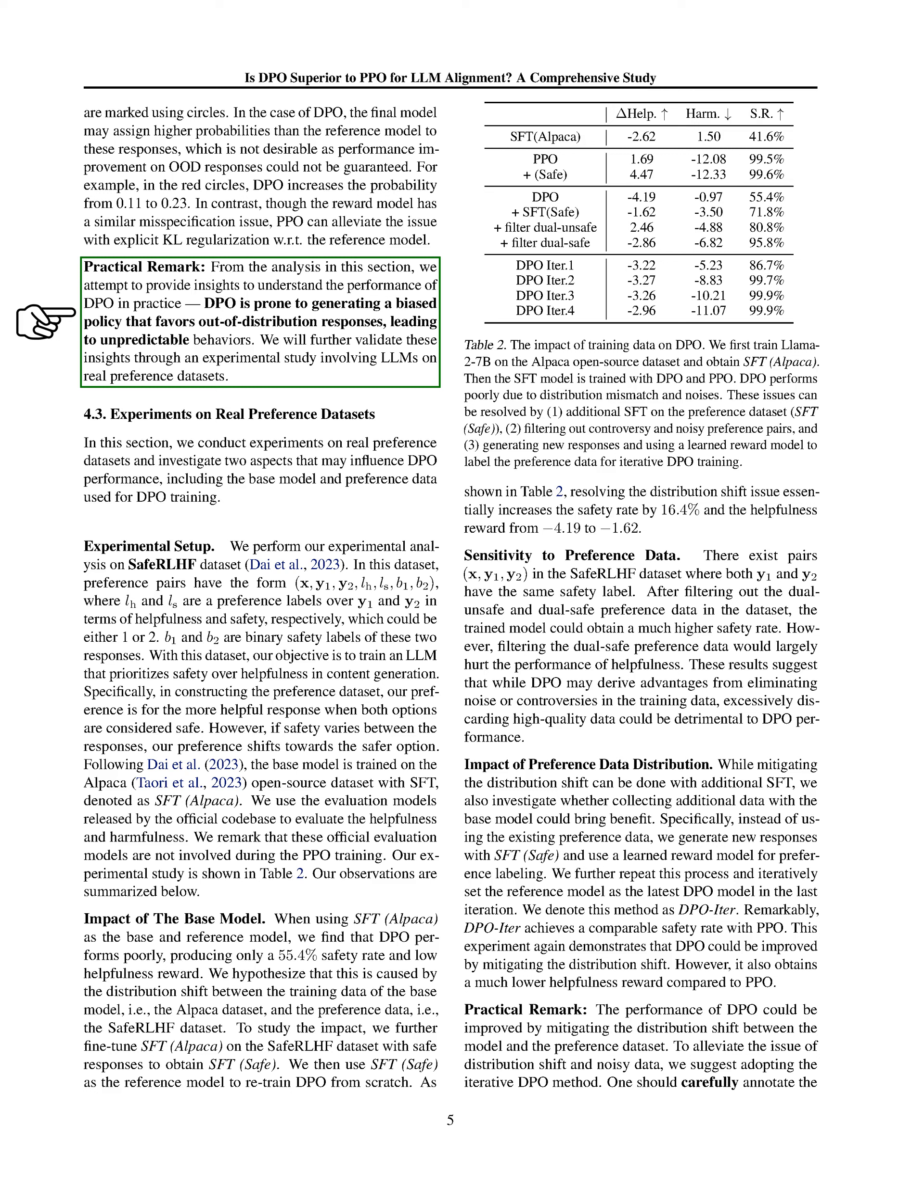We observed that when using a specific base model, DPO's performance was subpar due to distribution shift between the base model's training data and the preference dataset. By fine-tuning the base model on the preference dataset, we were able to improve DPO's safety rate and helpfulness reward.